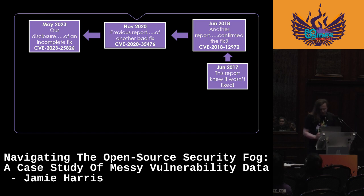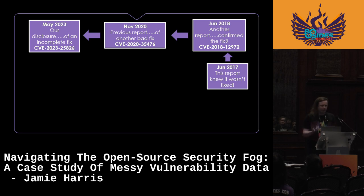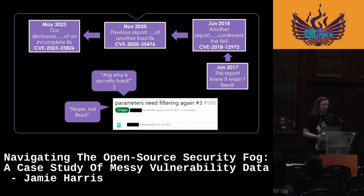But going back further — the fog clears again and we've landed in June 2017. A report saying that it wasn't fixed: it was known that this issue wasn't fixed and was still exploitable a year before someone wrongly confirmed that it was. That's not good. If you'd only seen that 2018 report, you would have got a misleading picture of the state of this vulnerability — thinking it's fixed, whilst malicious actors could still exploit it. I also like this particular issue report because just in the middle of it, someone simply comments: 'argh, why is security so hard? Sad face.' Which I'm sure every single one of us can sympathize with.